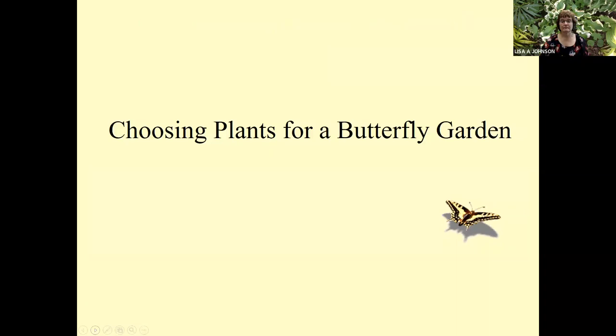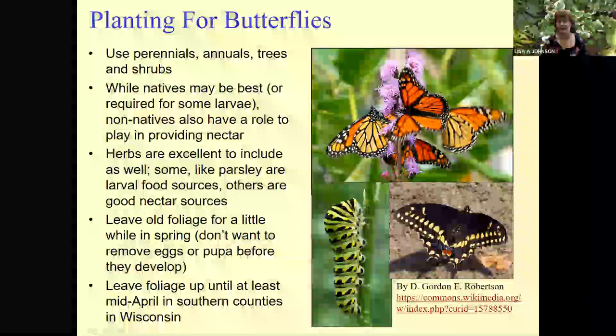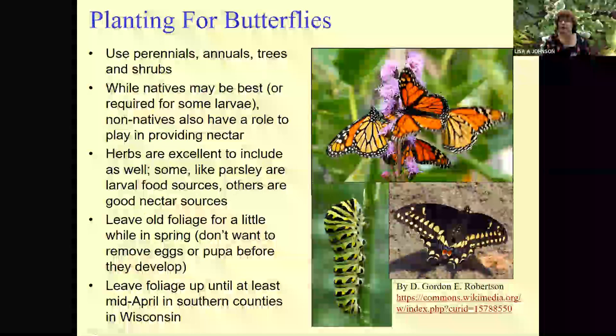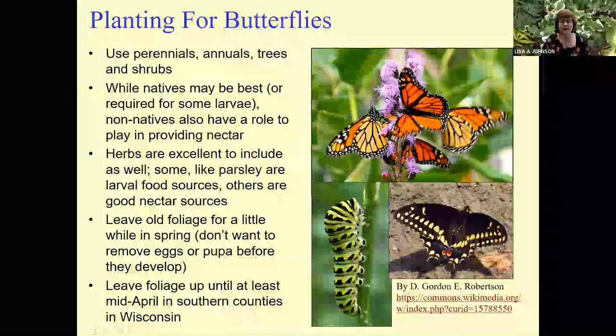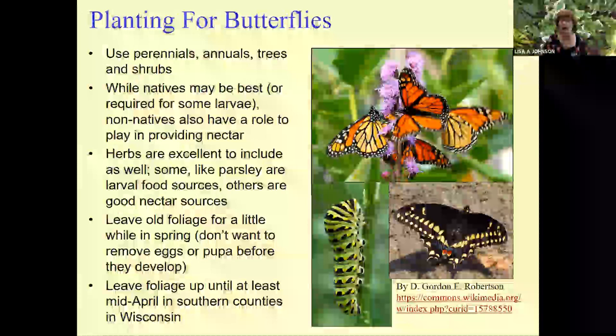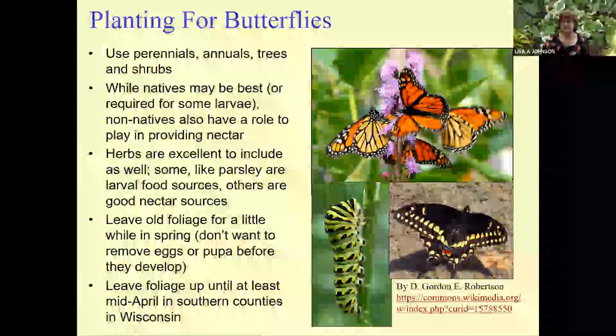Now we get into choosing plants. You can use annuals, perennials, trees, and shrubs. While natives may be best or required for some larvae, non-natives have a role to play too, and herbs might be one of those non-native plants. For example, parsley is highly favored by swallowtail butterflies, and the larvae will chow down happily on it. Remember to leave some old foliage and stems in place for a while in spring, as you don't want to remove eggs or pupae before they have developed — that's about mid-April in the southern counties, but later as you go up the state.